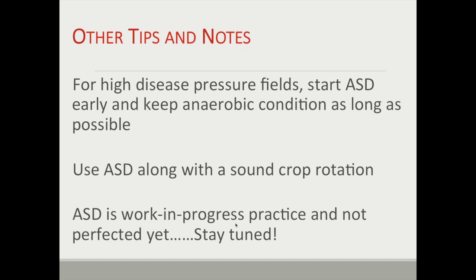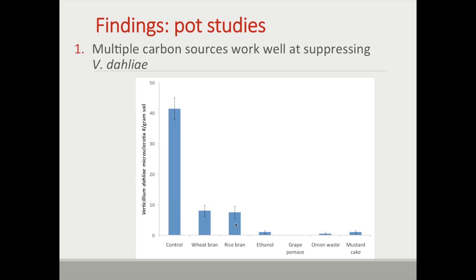We discovered that at least with suppressing Verticillium — and the same has been true in the Netherlands and Japan — you can use a number of different carbon sources and still get disease suppression. From our early pot studies, we've tried carbon sources like wheat bran, rice bran, ethanol, grape pumice, onion waste, and mustard cake. The bars show viable Verticillium dahliae microsclerotia in the soil — in the control it's about 42 per gram of soil. After ASD with different carbon sources, those numbers are reduced by 90% to 100%, meaning we have flexibility in what carbon source we can use.